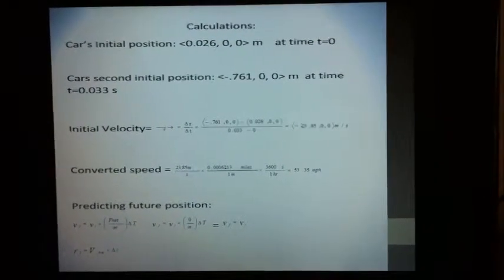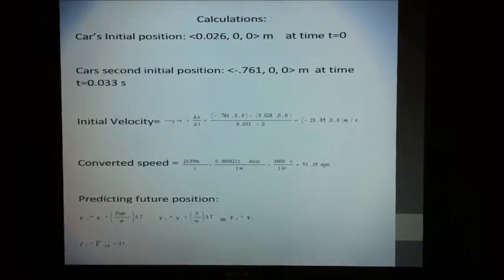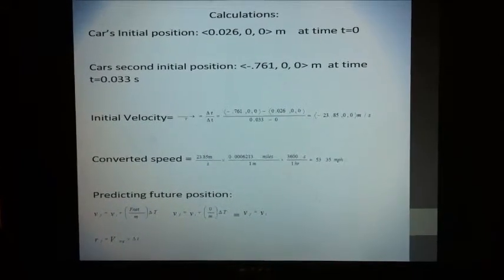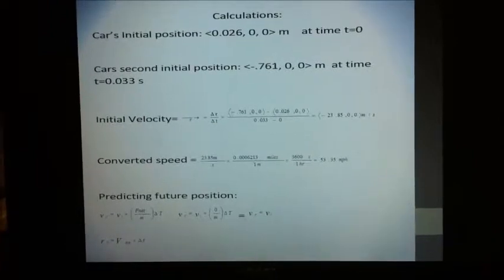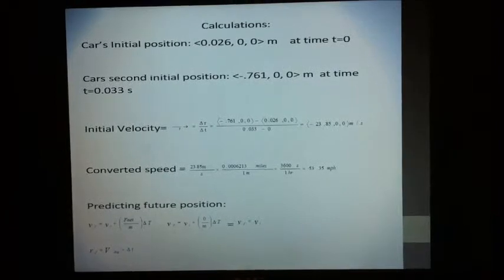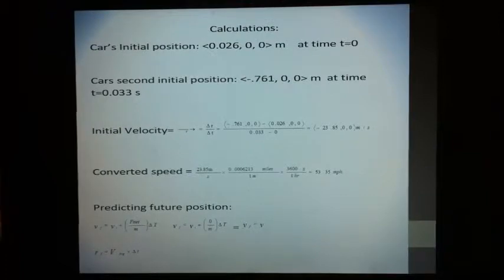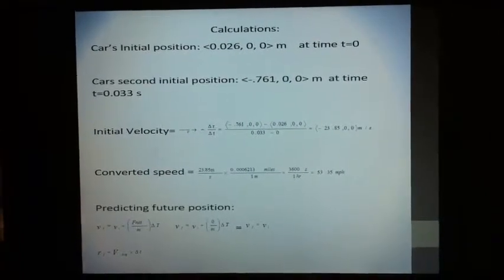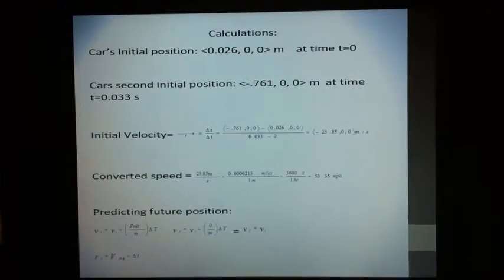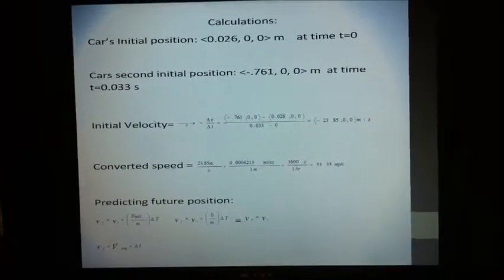Now before I can make a model to show the car's path, I first had to find the initial velocity. And I did this by using the formula delta r over delta t. I found the first two initial positions and the first two initial times, and I found my answer to be 23.85 meters per second in the negative x direction. I then converted this into miles per hour. This wasn't required, but I wanted to make sure my data was making sense. The speed I found was 53.35 miles per hour, and this makes sense because the car was traveling on a stretch of highway that was high speed.